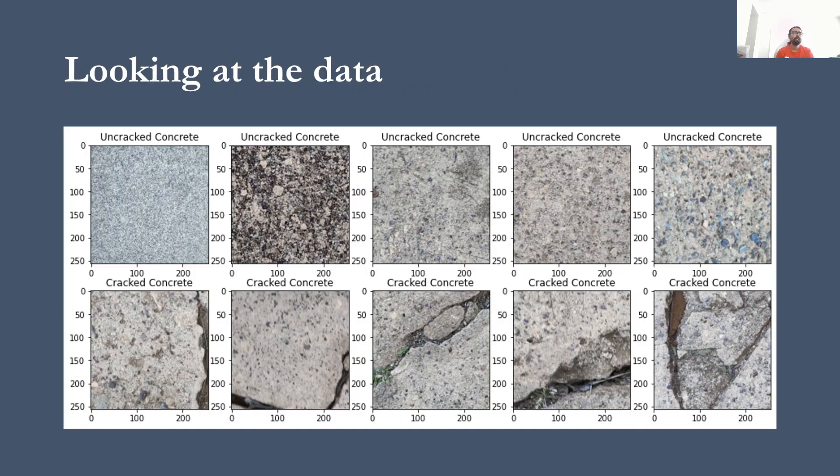So this is just looking into the data from the Python environment. So I built a small function where I can print five random images of uncracked concrete and five random images from the cracked concrete, just verifying they are being labeled properly in Python. And as I said earlier, I'm maintaining the size of 256 by 256 as you can see for all images.